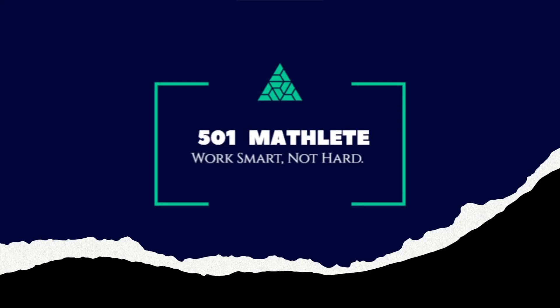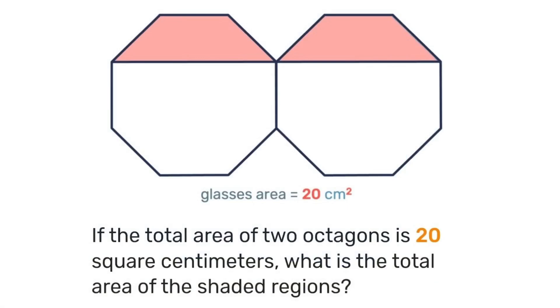Good day and welcome to 501 MatD where we work smart not far. In today's problem we're given these two octagons and we're told that the total area of both octagons is 20 square centimeters. With only that information we're to determine the total area of the shaded regions.